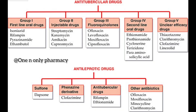Group 2 — injectable drugs. This is the second class of anti-tubercular drugs, with four drugs: Streptomycin, Kanamycin, Amikacin, and Capreomycin. These four drugs are used by injection in tubercular treatment.